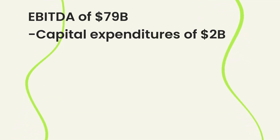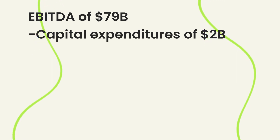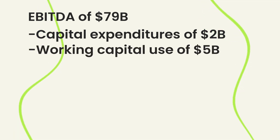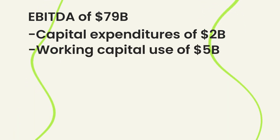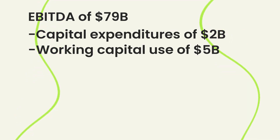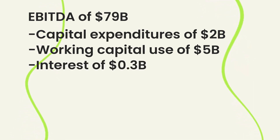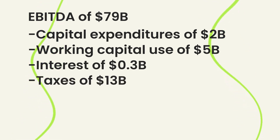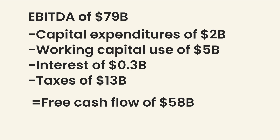Now we remove the investments: about $2 billion in capital expenditures, which are additions to property, equipment, or intangible assets. We also remove the change in working capital — looks like they're going to be using about $5 billion in additional working capital this year. We remove interest, estimated at about $0.3 billion, and about $13 billion in taxes based on their current tax rate. That gets us to about $58 billion in free cash flows — the cash the business expects to generate this year, a bit like the interest payment from the bond.